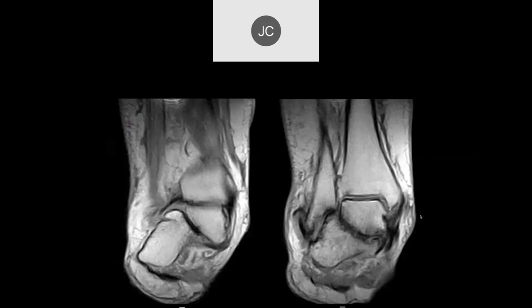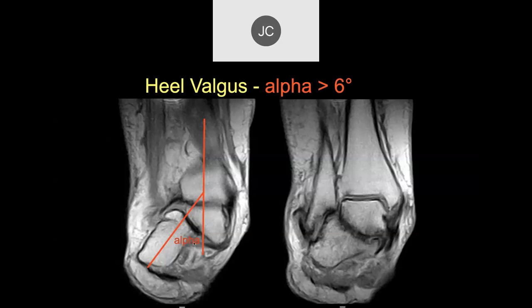Here it looks like there's some hind foot valgus. If we draw an angle between the long axis of the tibia and the axis of the calcaneus, this is called the alpha angle — like every other angle in radiology. If you have greater than 6 degrees, that's heel valgus. You can see here where it stops by impacting against the lateral malleolus, which is lateral bony impingement of the ankle, as we'll discuss later when we talk about impingement syndrome.